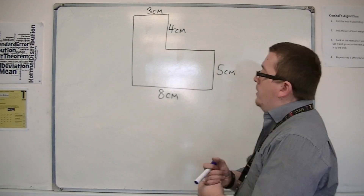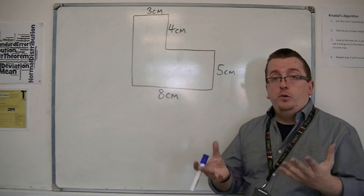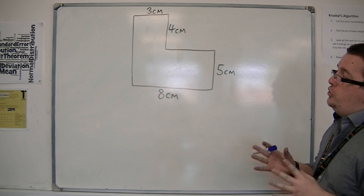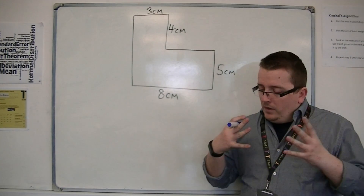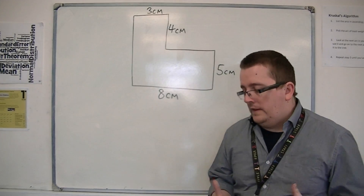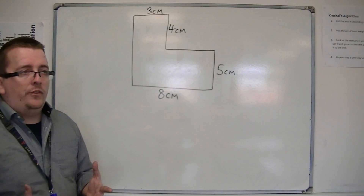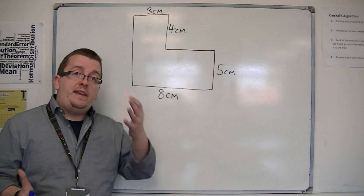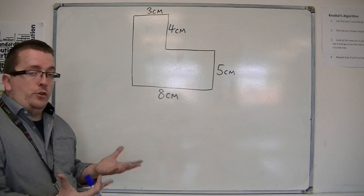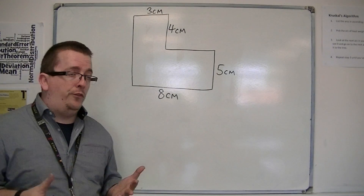I'm going to work through this example. I'm going to find both the area and the perimeter of this shape. The key thing to do in a lot of cases is to write down any lengths that you can see that aren't already given to you, because they may well come in useful.